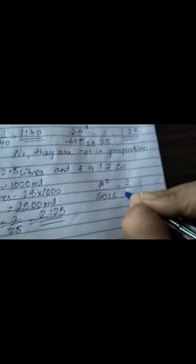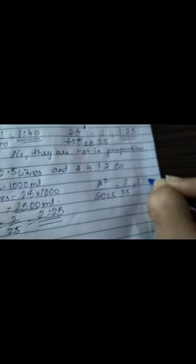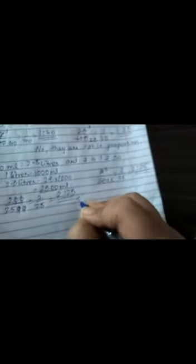Now we move on to the next one. That is 4 upon 50. Now these also will go in the table of 2. 2 twos are and 2 twenty-fives are. So 2 upon 25. So 2 is to 25. So are they in proportion? Yes. So we will write they are in proportion.